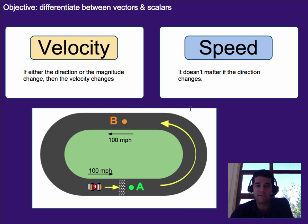With velocity, if either the direction or the magnitude change, then the velocity changes. With speed, it doesn't matter if the direction changes. You can go any direction and it's still the same speed if you're still going 55 miles per hour.